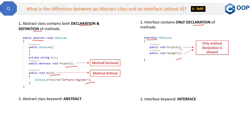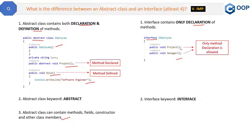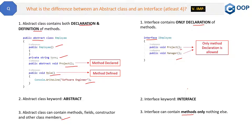The next difference is that abstract class can contain methods, fields, constructors, and other class members. If you look at the code of the abstract class, you can see we have a constructor and a field here. Similarly, we can have other class members in an abstract class. Whereas in interface, it contains only methods — there should not be any fields, constructors, or other class members. Only methods are allowed in interfaces.